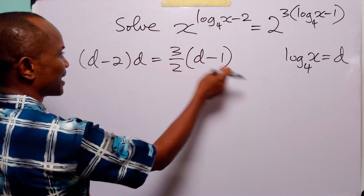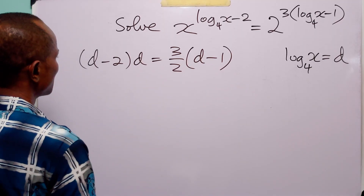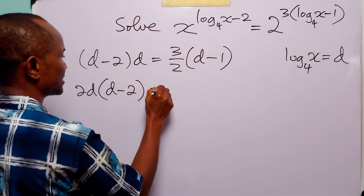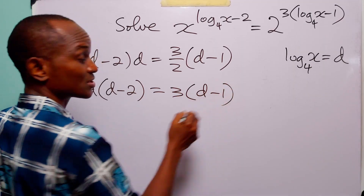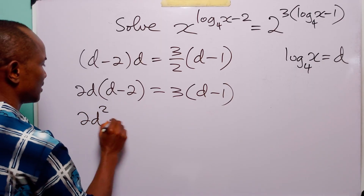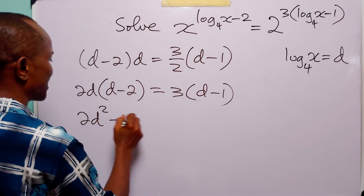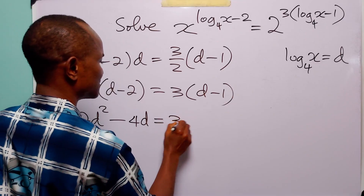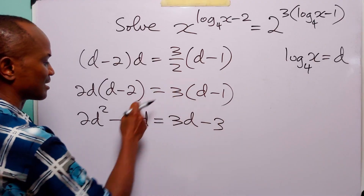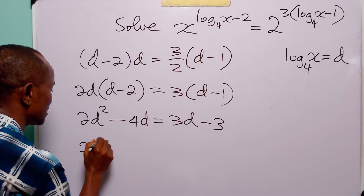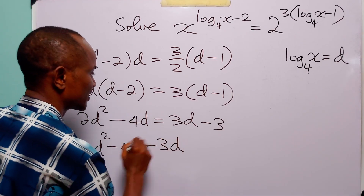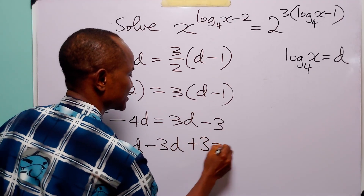Now to get rid of this fraction, we multiply through this equation by 2. When we do that, we have 2 times d into d minus 2, and this is equal to 3 into d minus 1. Opening both brackets, we have 2d times d is 2d squared, 2d times minus 2 is minus 4d, and this is equal to 3 times d is 3d, and 3 times minus 1 is minus 3. So bringing all the terms over to the left hand side.